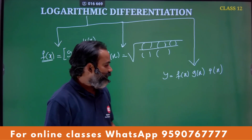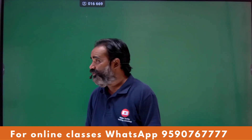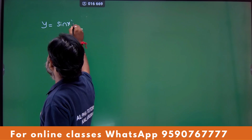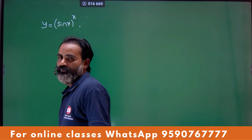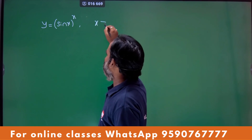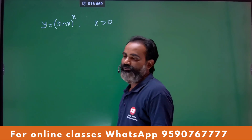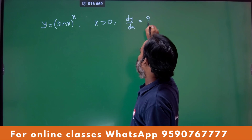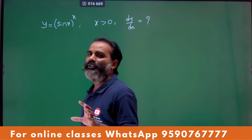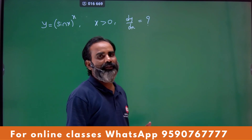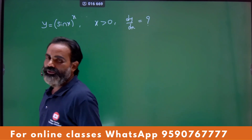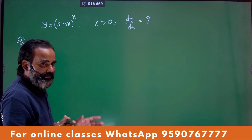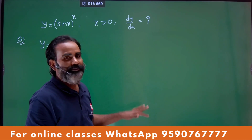So, this example — suppose if I take one function: y equal to sin x to the power of x. Here you define x should be greater than zero, positive. Find dy by dx — this is the problem. Usually you have 2 marks; expect solve length 3 marks. In this video, you have a short method and a length method. Observe.